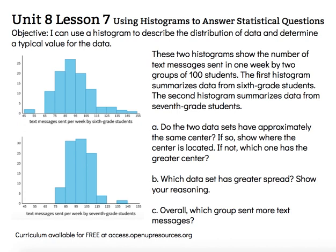Letter A: Do the two data sets have approximately the same center? If so, where is the center located? If not, which one has the greater center? Center is a word we use with mean or average, which is associated with the word typical. So we're looking for that center, or that balance point for the data, as though it were a teeter-totter. Where would that fulcrum be placed so that the teeter-totter would be enjoyable? I'm going to go and mark the center of both of those histograms.